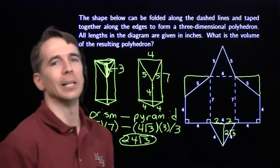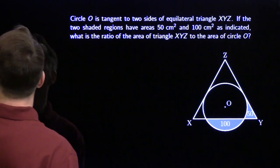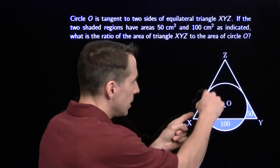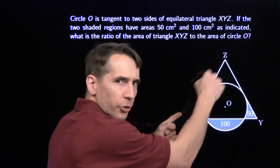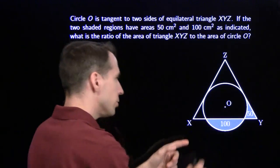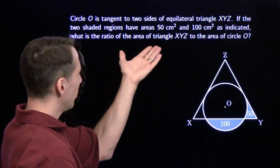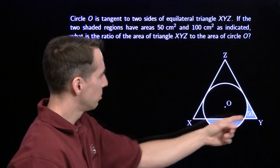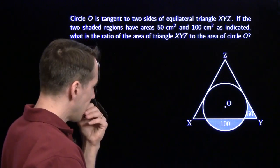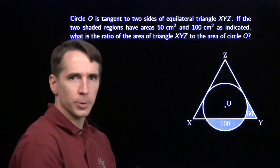And we got that without Harvey at all. All right, we are ready for the next problem. Here we go. We have a circle tangent to two sides of this equilateral triangle. And we're giving the area of this shaded region is 100. The area of this shaded region is 50. We want the ratio of the area of the triangle to the area of the circle. That's a weird thing to look for.